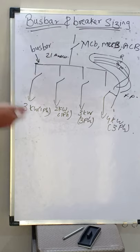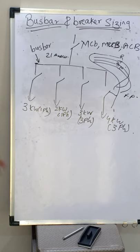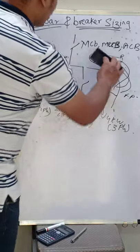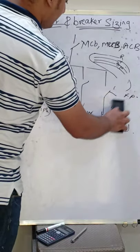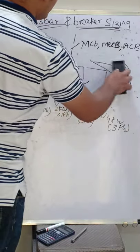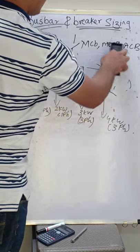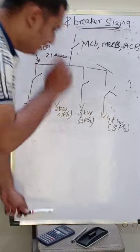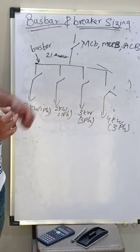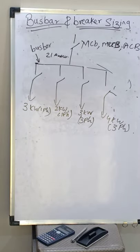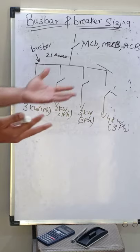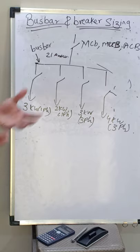Now a short brief about MCB, MCCB, and ACB. MCB is nothing but a miniature circuit breaker. The role of MCB is short circuit and overload protection. Let me explain what short circuit and overload protection means.